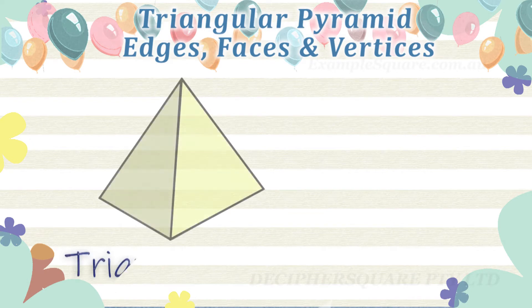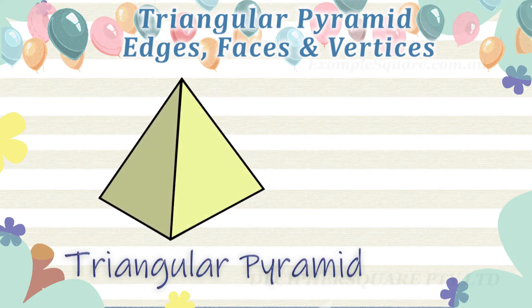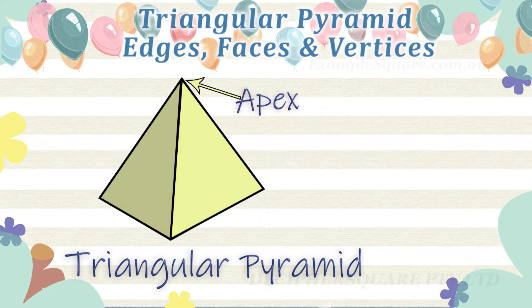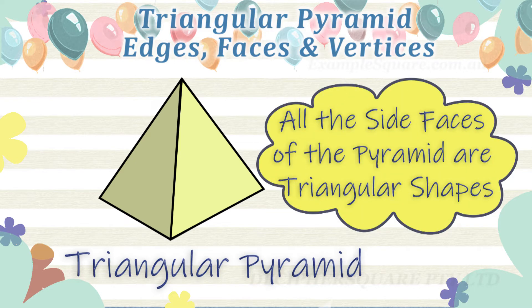A pyramid is a three-dimensional shape with a single polygon shape base and flat triangular sloping sides that meet at the common top point called the apex. All the side faces of the pyramids are triangles.